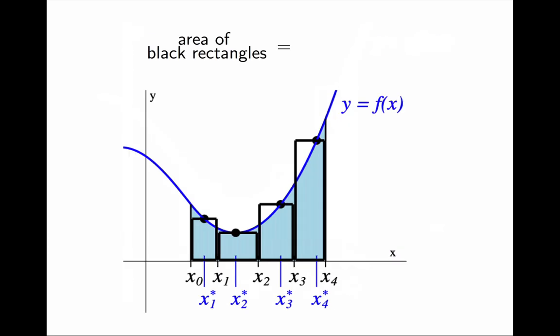The width of each rectangle is the same as before, and the height of each rectangle is the value of f at the point xᵢ*. So the area is the sum from i equals 1 to n of f(xᵢ*) times Δxᵢ.